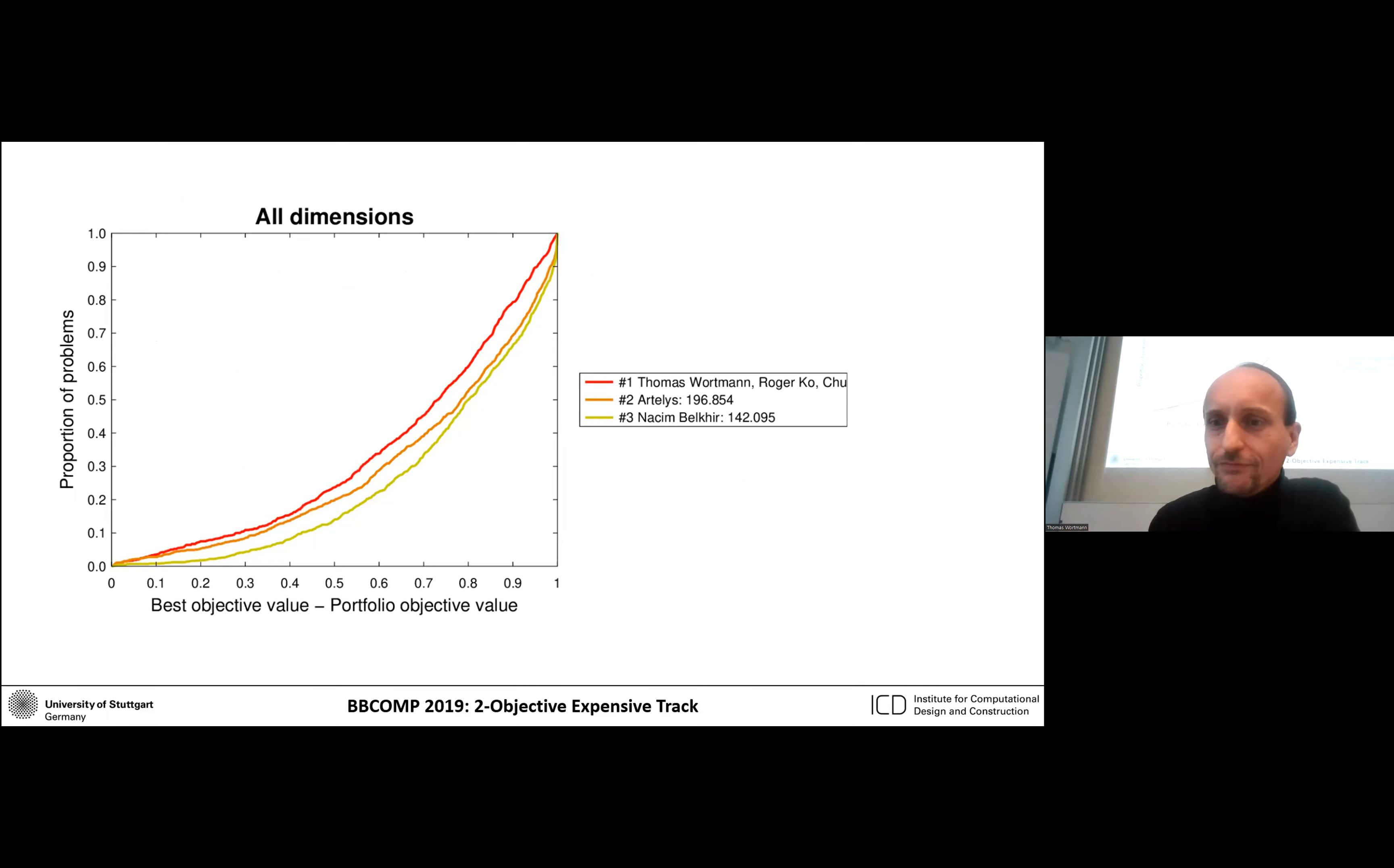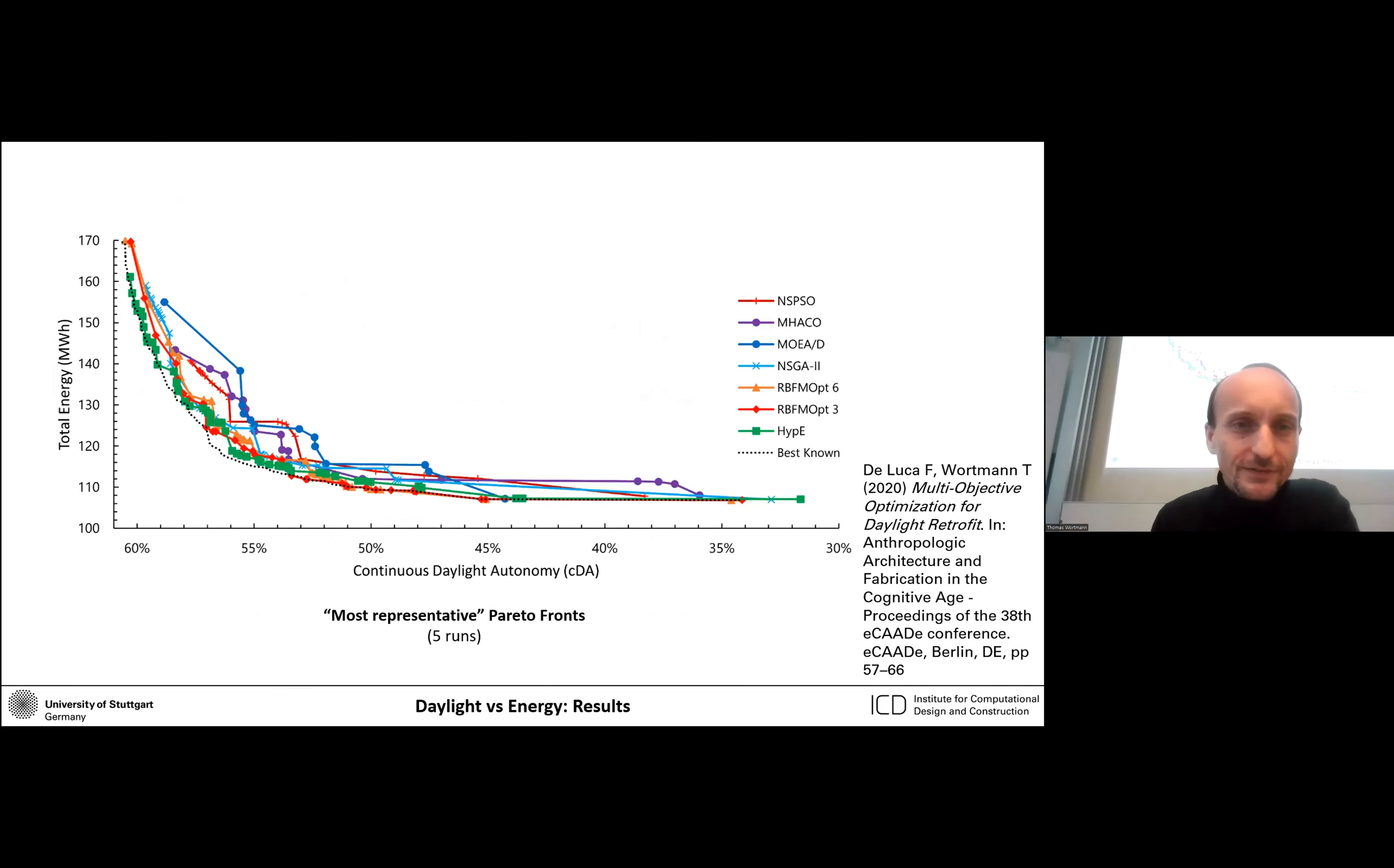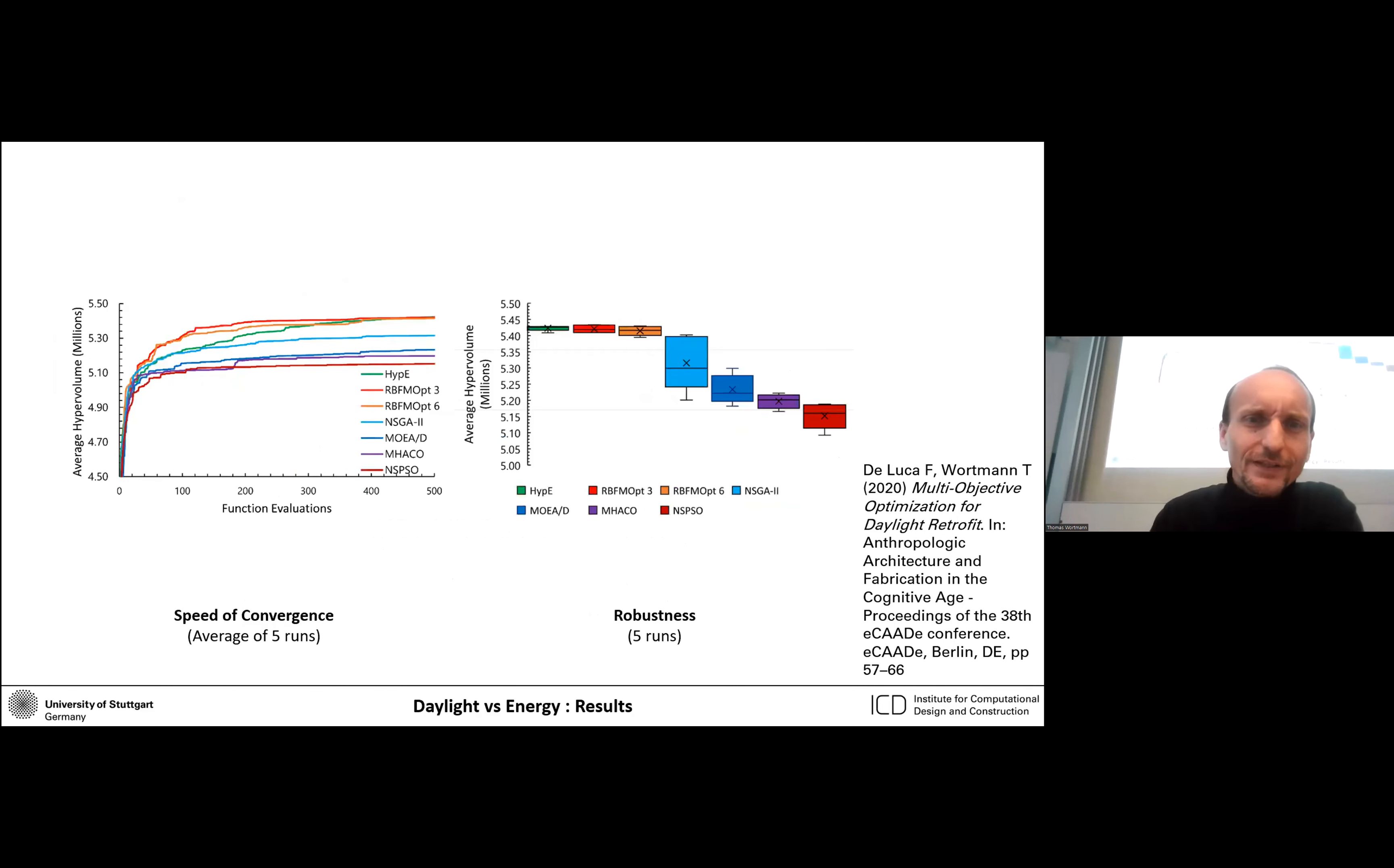Then I can do different weighted sums over these surrogates, and then I can just do basically a series of single objective optimizations to approximate the Pareto front. As my co-advisor at the time, Giacomo Nanicini, a mathematician and computer scientist said, a surprisingly effective approach for such a simple heuristic. We did win the black box optimization competition two objective expensive track in 2019 with this. Okay, there were only two other competitors, but Artilis is a company that sells optimization algorithms for a living. So if you can beat them that is quite nice. I just have some more applications. Here we're looking at the sports hall, trying to optimize the daylight and meanwhile minimizing the energy consumption. This is a sports hall in Estonia.